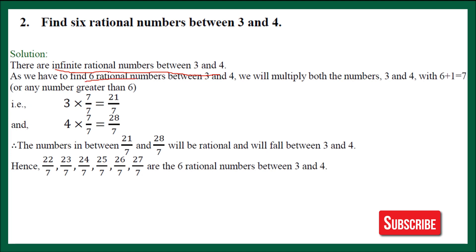To find 6 rational numbers, we will multiply both numerator and denominator by 7. When we need to find a certain number of rational numbers — here we need to find 6 — we add 1 to it. The number we get, in this case 7, we multiply and divide by that number. Here, for 3, I have multiplied and divided by 7 upon 7. Multiplying and dividing makes no difference because 7 upon 7 equals 1. So 3 multiplied by 7 upon 7 is equal to 3 only. Simplifying: 3 sevens are 21, so numerator becomes 21 and denominator is 7.